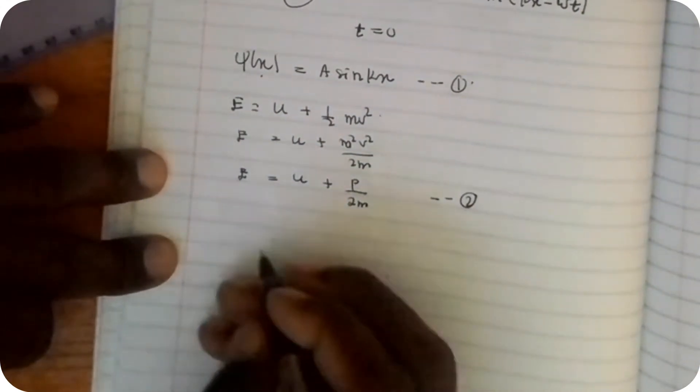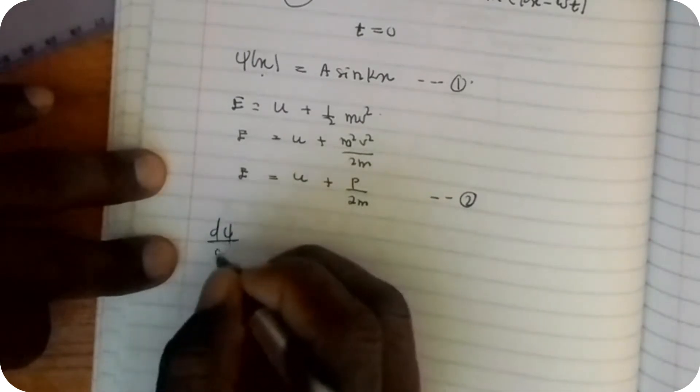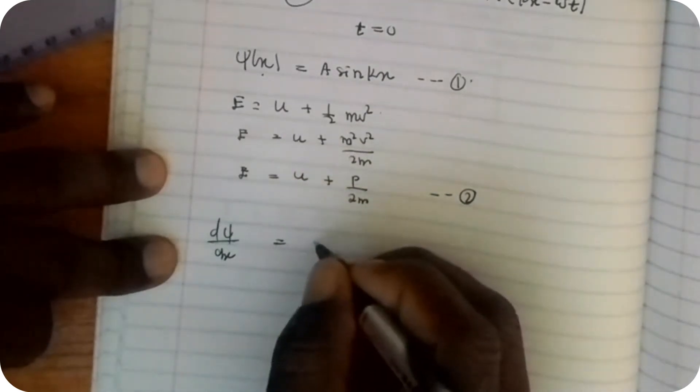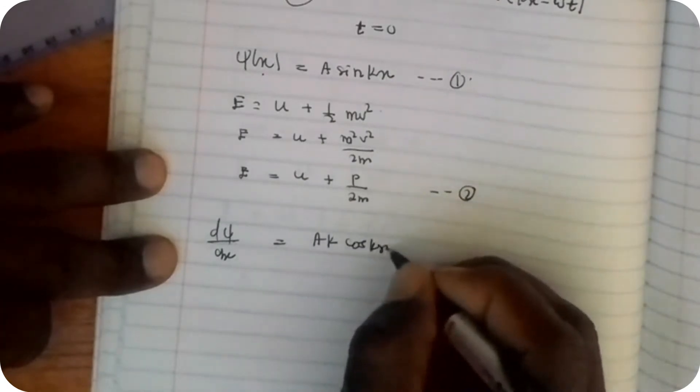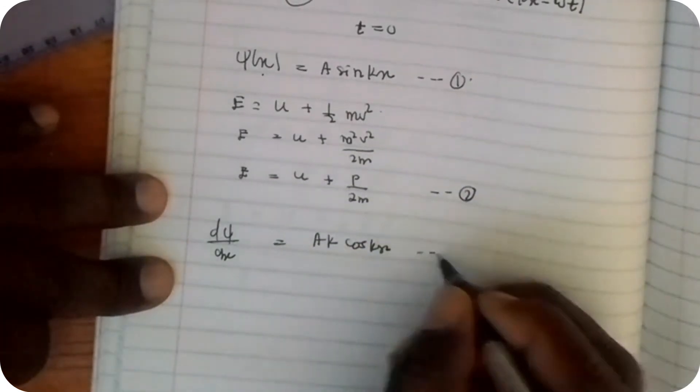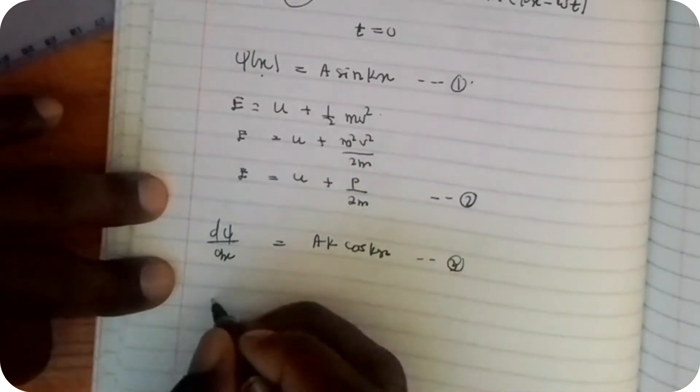Let's differentiate equation 1 with respect to x: dψ/dx equals Ak cos(kx). Let's differentiate again with respect to x. This is now equation number 3.